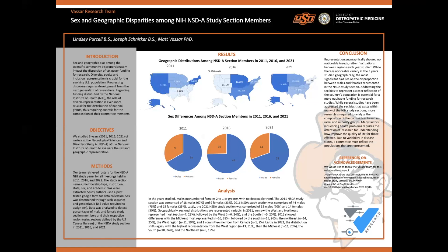Our team used rosters for all meetings of the NSDA study section panels from the NIH in 2011, 2016, and 2021. From the rosters, we extracted the members' names, their membership type, institution, state, sex, and academic rank. The study authors used a pilot-tested Google form for data collection. Sex was determined through either a web-based search or genderize.io, where a value of 0.6 was required to assign sex. Data was analyzed to detect percentages of males and females among the study section members and their respective regions, defined by the U.S. Census Bureau for each year.